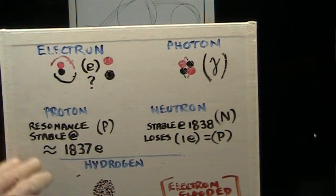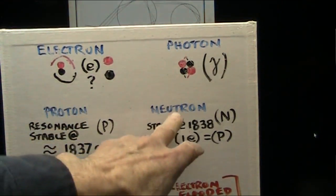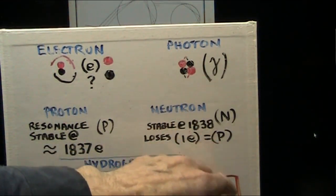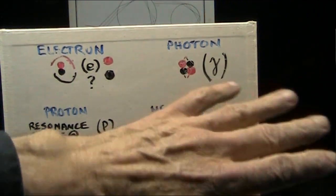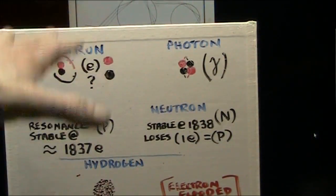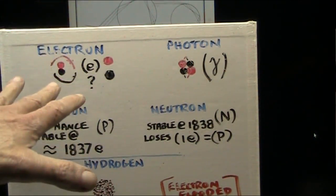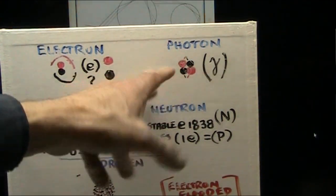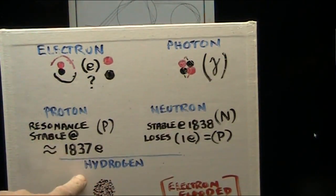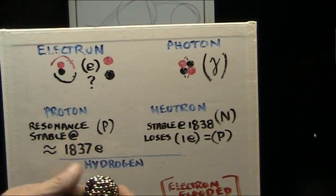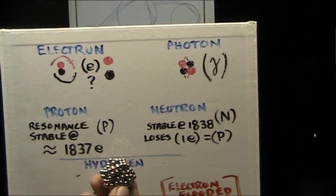Protons are made up of 1837 electrons. Neutrons are made up of 1838. They're just neutral because they have an even number. Protons are not neutral because it has an uneven number. Electrons are just a single particle existing in all these. Photons are two back-to-back. Hydrogen is basically one little bit out on the edge of a zillion particles in the center, which is just like this. These are all the little electrons.